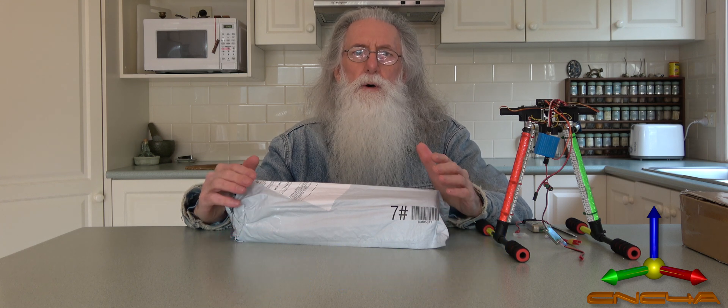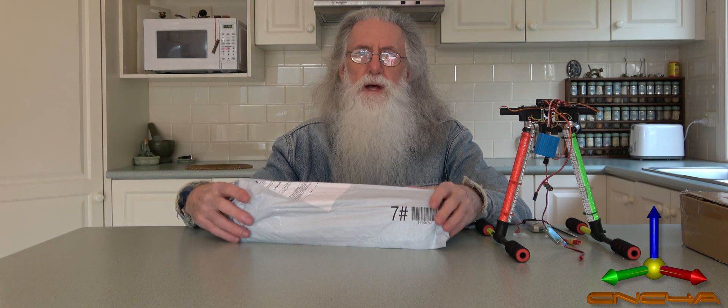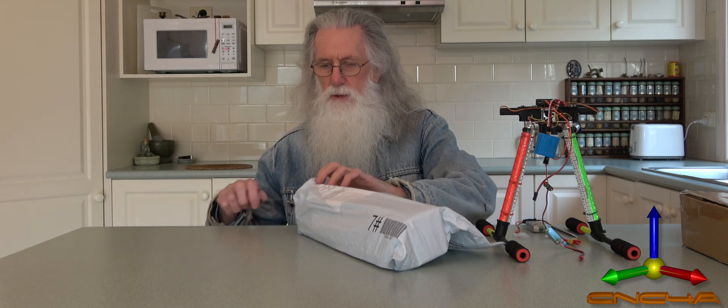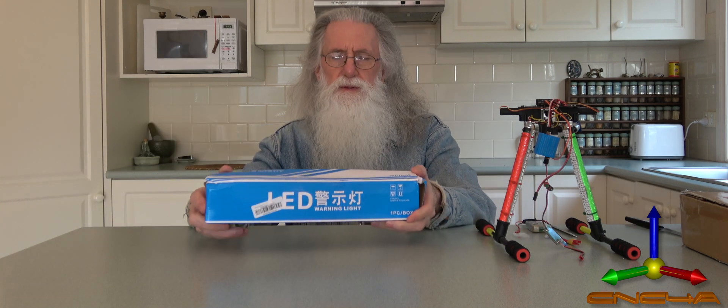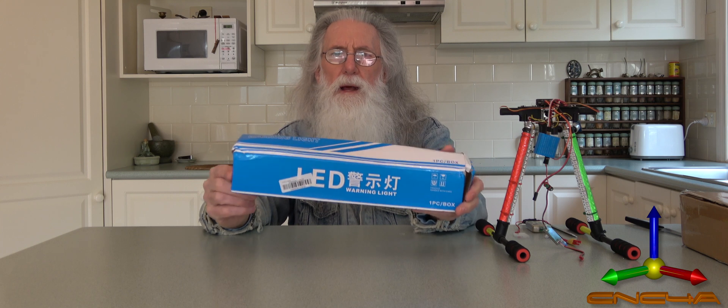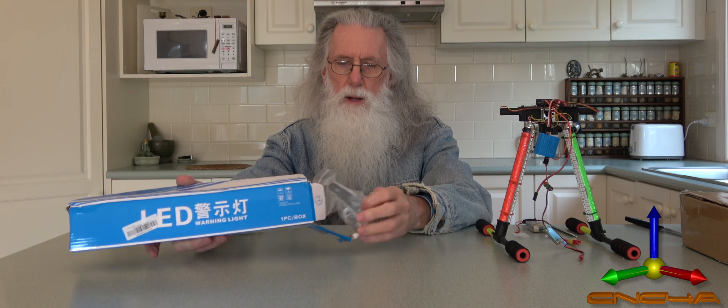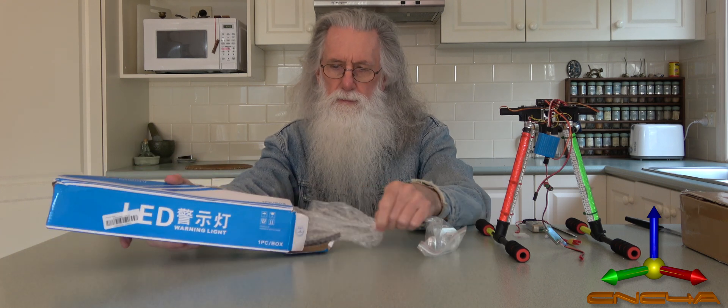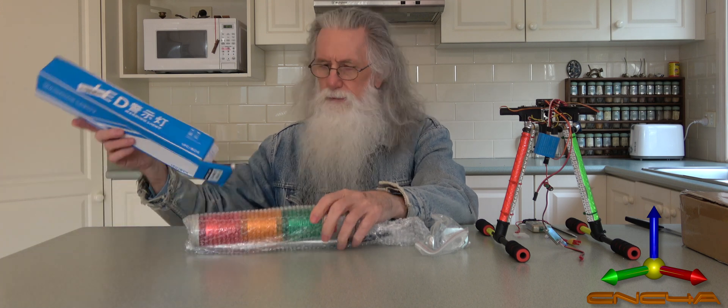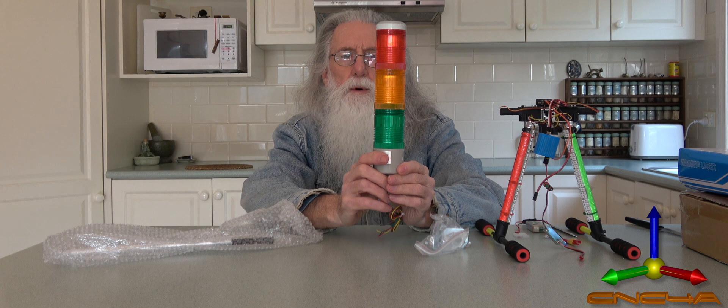What's a stack light? Some people call it pancake light, alarm light, or warning light. I'll just open it up and show you exactly what it is. This is the LED warning light, and it's a bracket, and here it is. Some even call it a traffic light: stop, caution, and go.